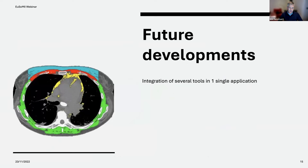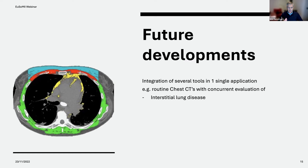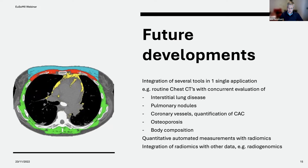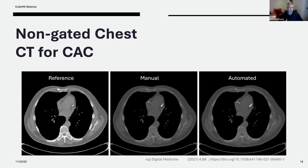Regarding future developments, more applications will be integrated into one single application. For example, routine chest CTs will be used to simultaneously analyze interstitial lung disease, pulmonary nodules, coronary vessels, calcium scoring, osteoporosis, and body composition. Radiomics will allow automatic quantification of data, and radiomics will also be integrated with genetic data — which we call radiogenomics. This is an example of a non-gated chest CT for calcium scoring: the automated annotation in coronary vessels is already quite accurate.